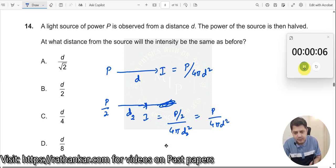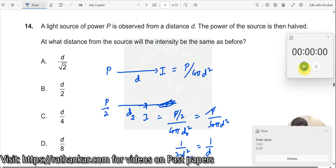So, making equating these two, what do I get here? This P, this P goes away. This 4π, this 4π goes away. So, I have 1 by 2d2² is equal to 1 by d².